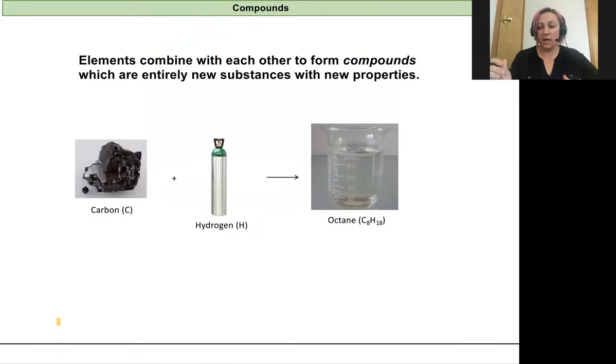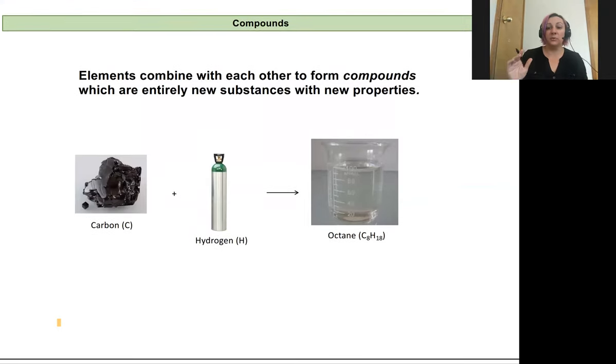Elements will combine in a number of ways to form different compounds. Compounds are thought of as a combination of atoms coming together in different amounts to form something new. These are entirely new substances with completely different properties than the elements that made them up.